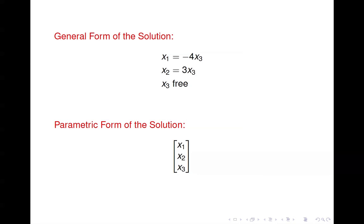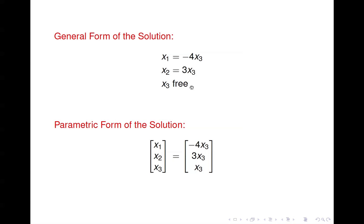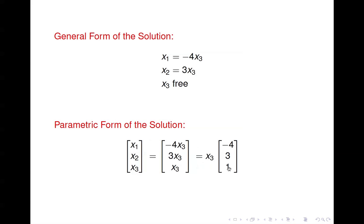To get the parametric vector form of the solution, we start with a generic solution vector and copy down the general form. Then to write it in parametric vector form, we factor out the parameter. X3 is the parameter because we can set X3 to be whatever we want to generate as many solutions as we want. If you have more than one free variable, you'll have more than one parameter and vector. For example, if X4 were also free, you'd have X3 times this vector plus X4 times some other vector — one vector for each free variable.